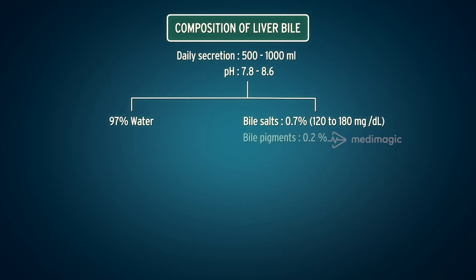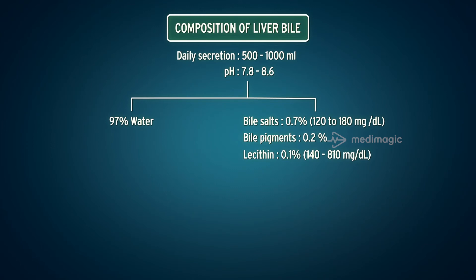Bile pigments constitute 0.2%, and include biliverdin, bilirubin, and its derivatives. Lecithin, a phospholipid, makes up 0.1%, at 140 to 810 milligrams per deciliter. It is present in an inactive form; when converted to lyso-lecithin (active form), it damages the cell membrane.